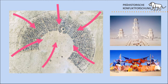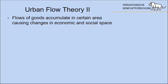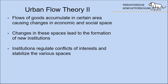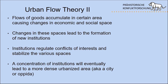Urban space can be very temporary — don't try to connect it only to long-term standing settlements. Even in prehistory we may have urban places that pop up, are not very resilient because they're dependent on flows of goods, and might just disappear and collapse. Flows of goods accumulate in a certain area causing changes in economic and social space, and these changes can lead to the formation of new institutions. Institutions regulate conflicts of interest and stabilize spaces so flows of goods continue arriving. The concentration of institutions eventually leads to a more dense urbanized area, like a city or an opida in the central European Iron Age.